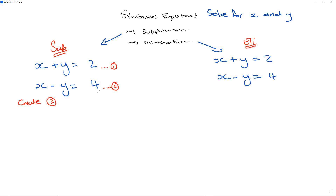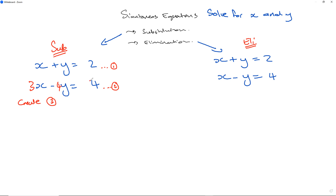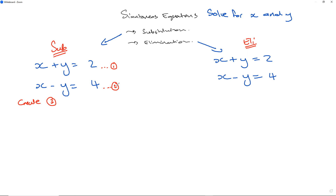There's no strict rule — they look similar in difficulty so you can choose any. However, if one equation had larger coefficients, you'd pick the simpler one to go faster. I'll create equation 3 from equation 1 by making y the subject: move x to the other side, giving y equals 2 minus x. I'll call this equation 3.